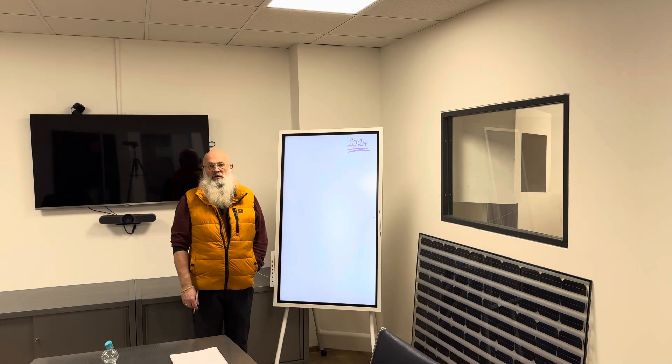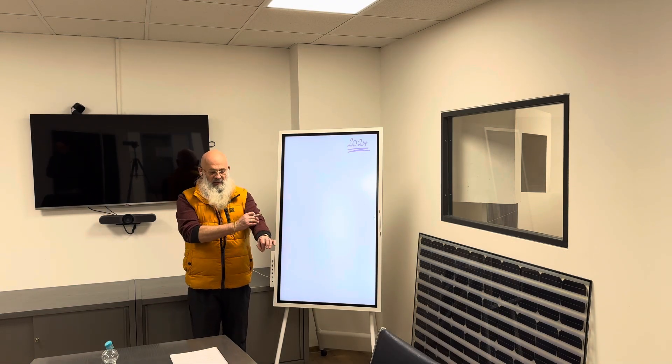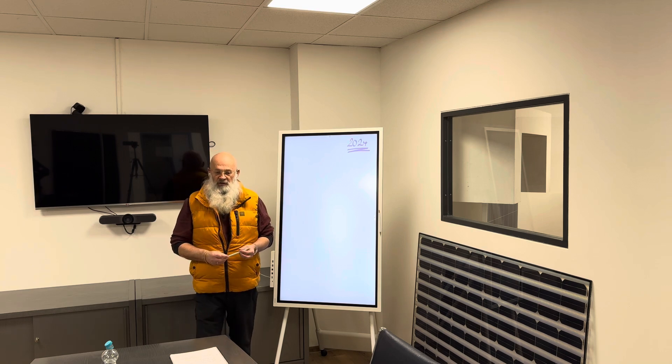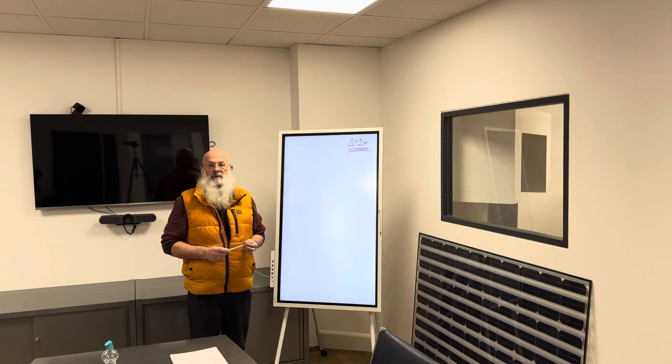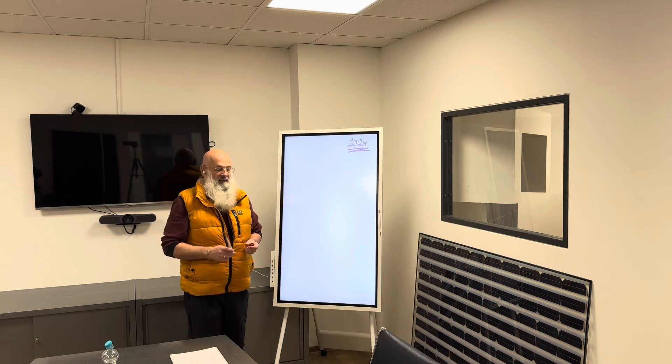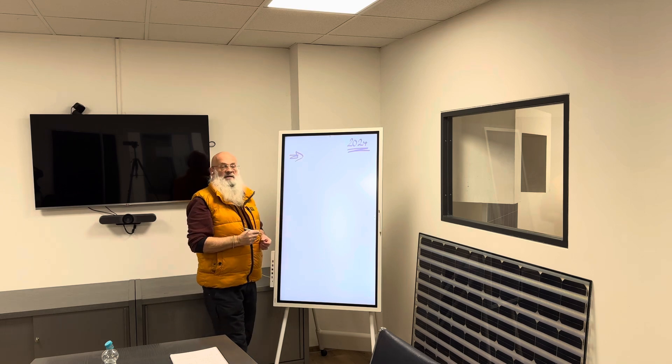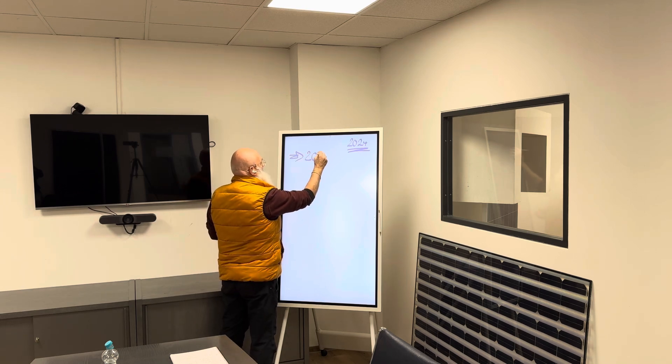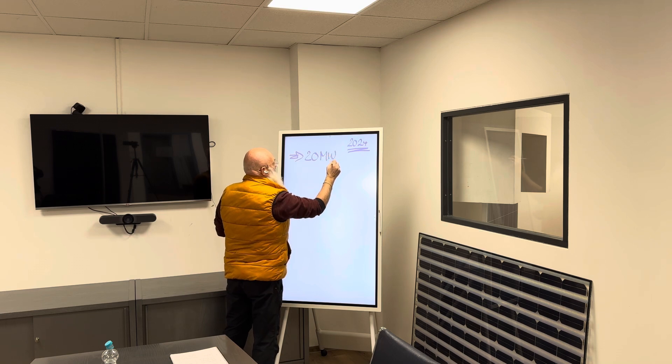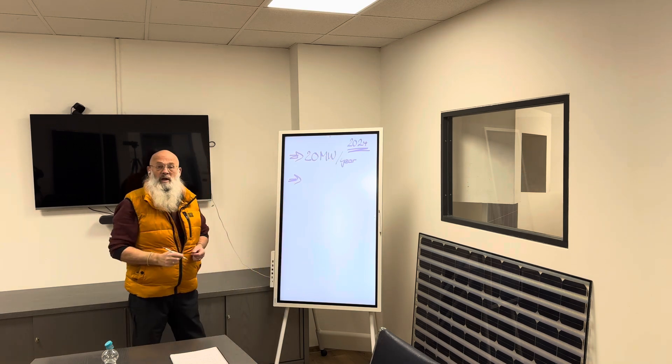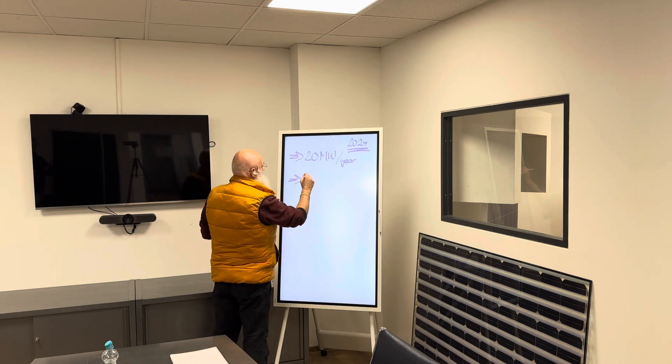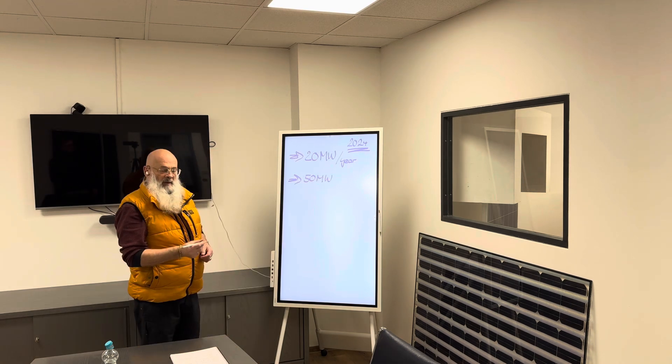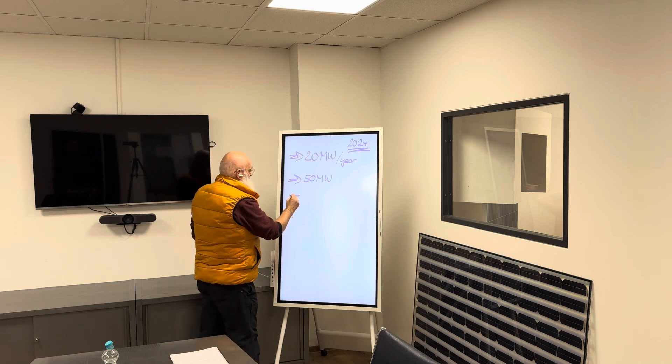Today we want to talk about the investment in solar module production. You know from previous lessons that we have different sizes of solar module factories. The smallest size starts with 20 megawatt per year, the next size is 50 megawatt, then 100 megawatt configurations.